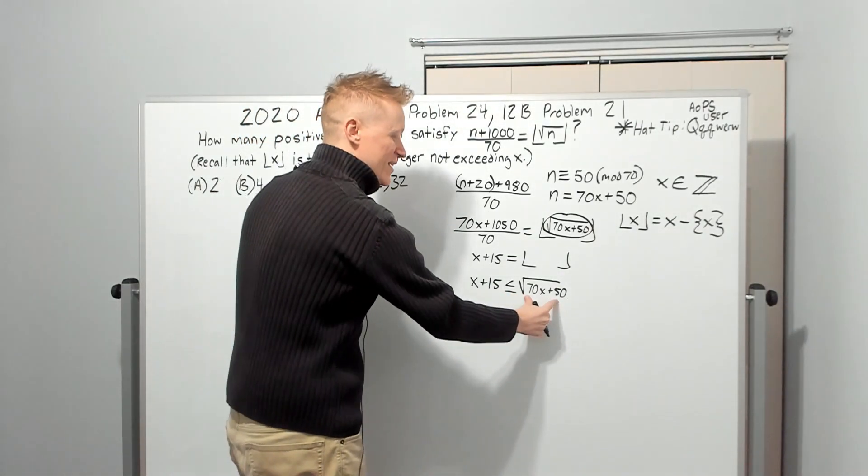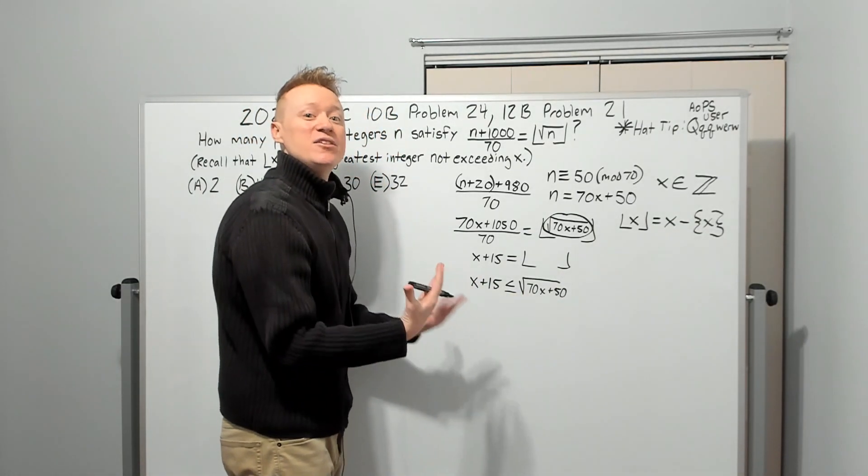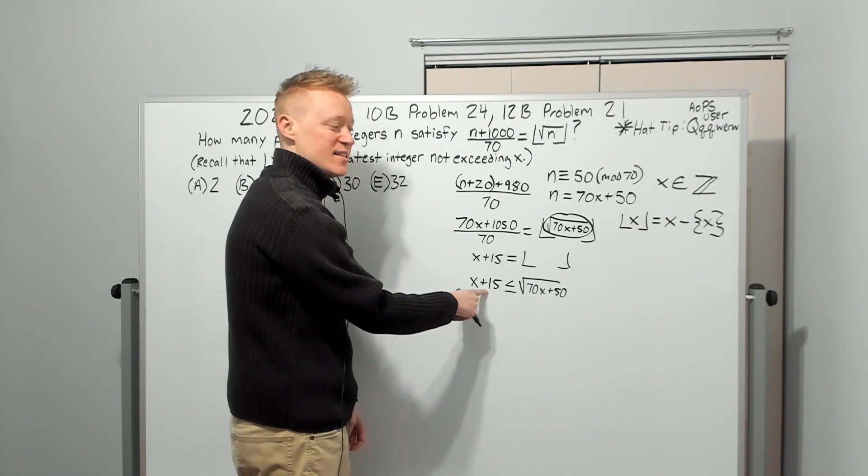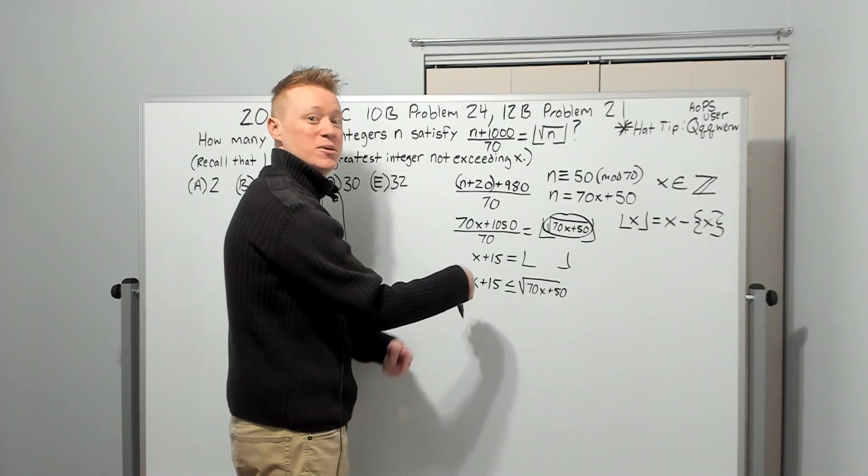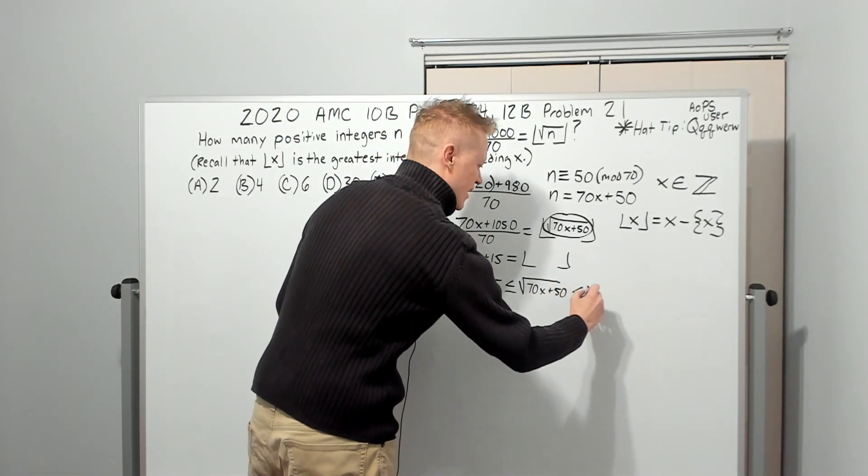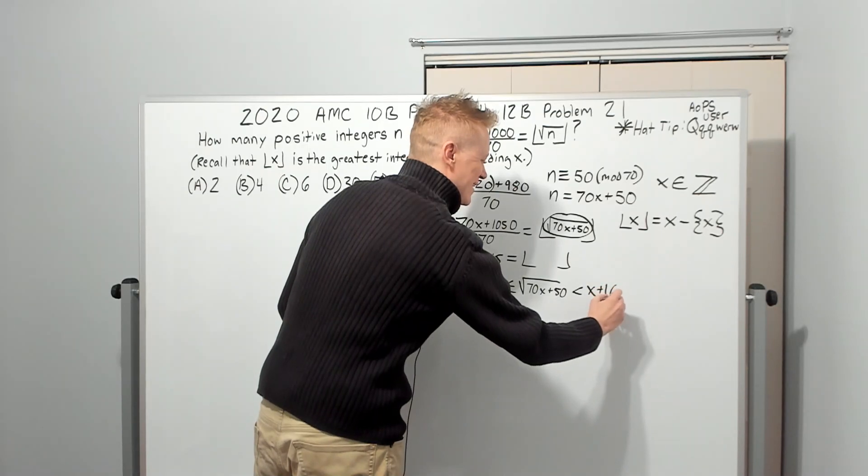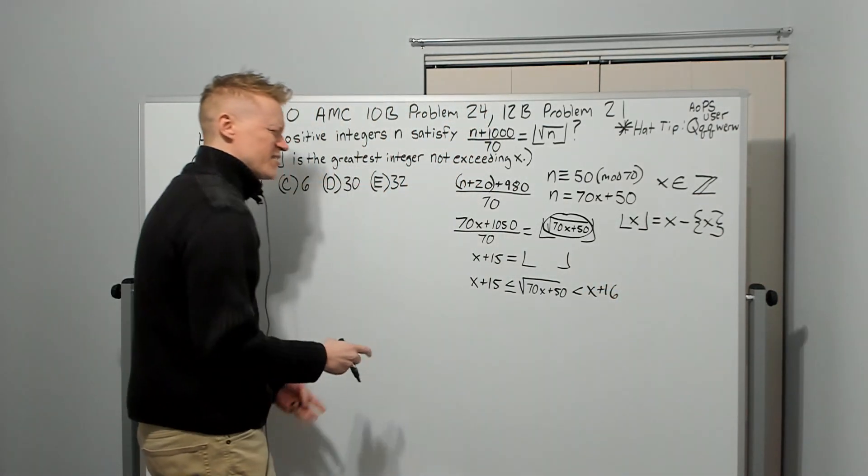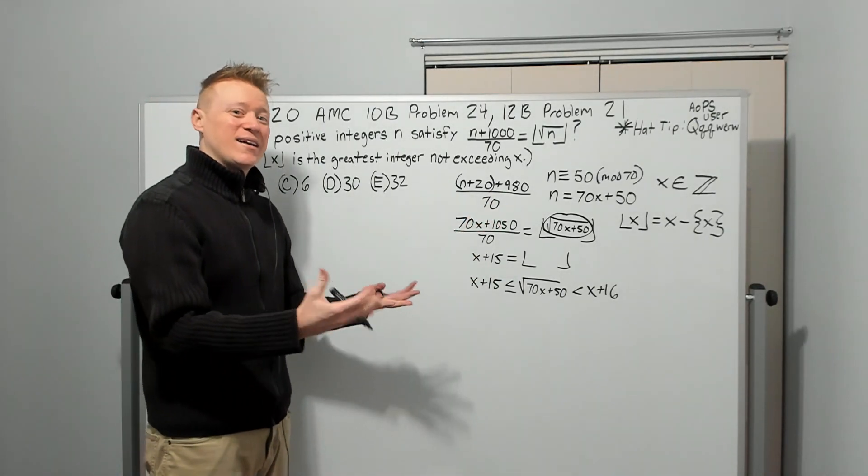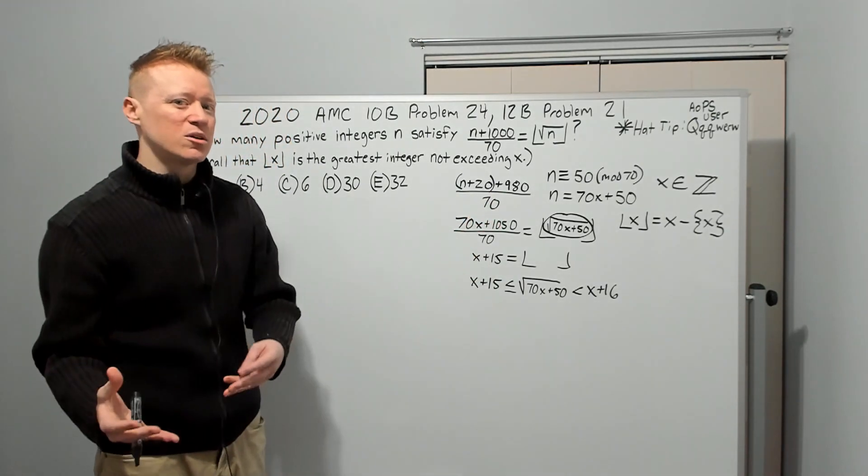But that's not all we can say. We also know that this needs to be sandwiched between two integers. If it was again, more than one larger than this, it would not round down to this. It would round down to the larger value. So we can say that this is X + 16. Okay. So now we've got an inequality. At least we don't have to deal with greatest integer anymore, right? That's the goal. Make complicated things easier to work with.